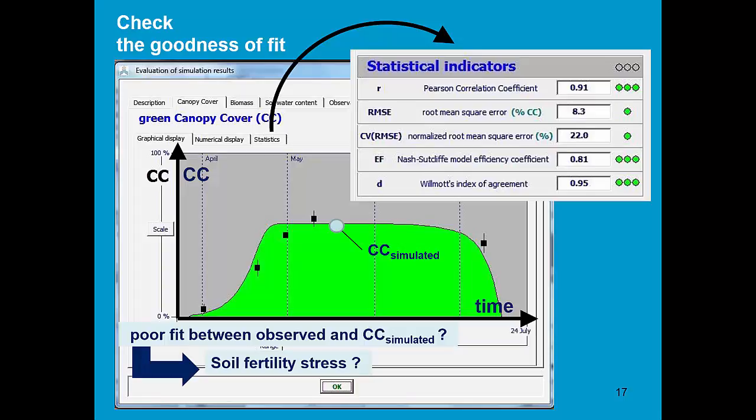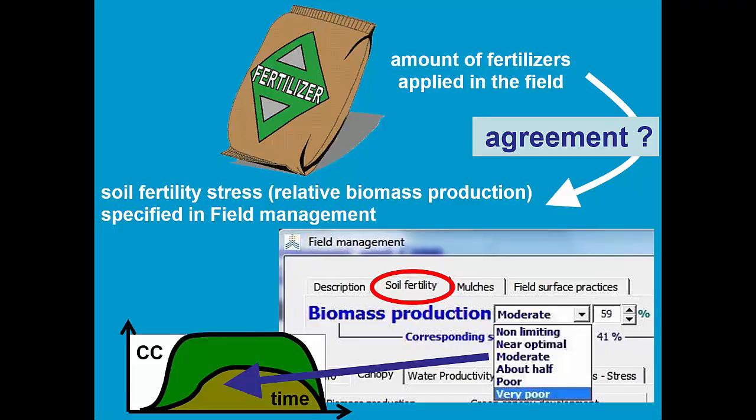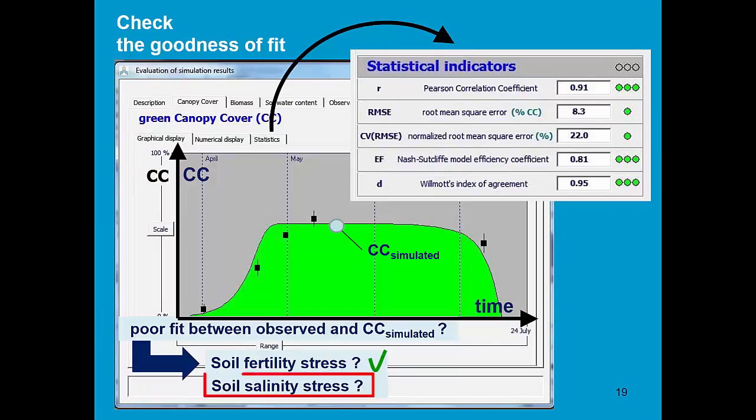Now if there is a poor fit between observed and simulated canopy cover, there might be a problem with the simulation of soil fertility. Due to soil fertility stress, the canopy was lower than what is simulated. Therefore, we should see if there is indeed an agreement between the amount of fertilizers applied in the field and the setting of soil fertility stress in the field management menu. Due to fertility stress, indeed, a smaller canopy cover is simulated. If we have checked the soil fertility stress, we should also check soil salinity stress. Also soil salinity stress affects the canopy development.